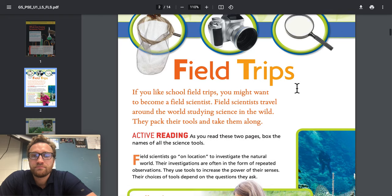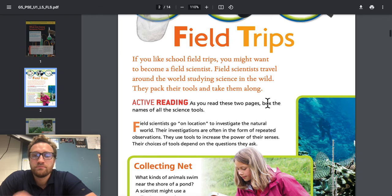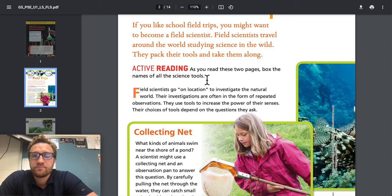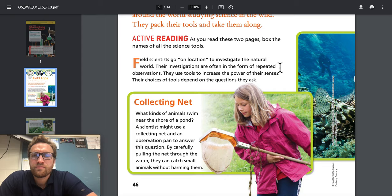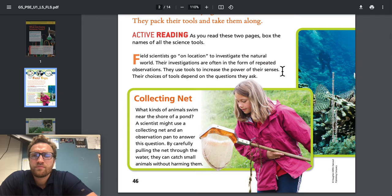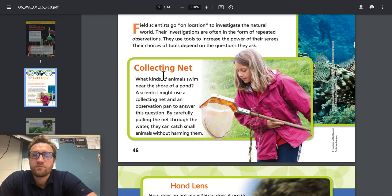Field trips. If you like school field trips, you might want to become a field scientist. Field scientists travel around the world studying science in the wild. They pack their tools and take them along. As you read these two pages, box the names of all the science tools. Field scientists go on location to investigate the natural world. Their investigations are often in the form of repeated observations. They use tools to increase the power of their senses. Collecting net: What kinds of animals swim near the shore of a pond? A scientist might use a collecting net and an observation pan to answer this question.